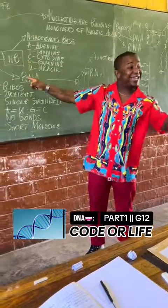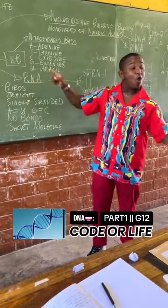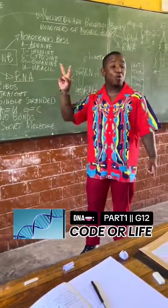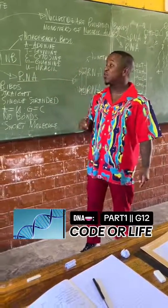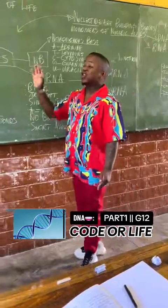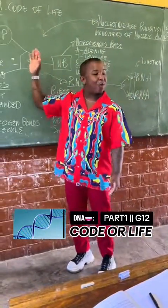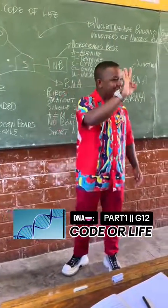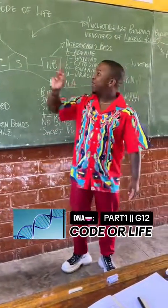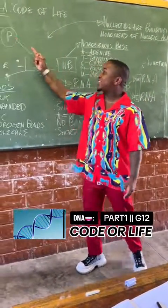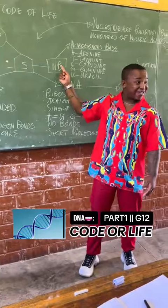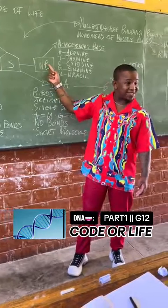So this structure — these molecules are either DNA or RNA. Those are our two nucleic acids. So it is the phosphates, the sugar, and the nitrogenous bases.